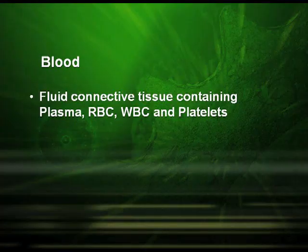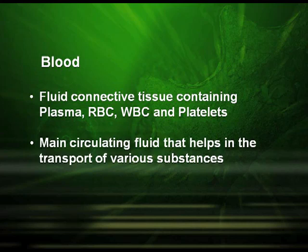Blood is the next type of connective tissue. It is a fluid connective tissue consisting of plasma, RBCs, WBCs, and platelets. It is the main circulating fluid that helps in the transport of various substances.